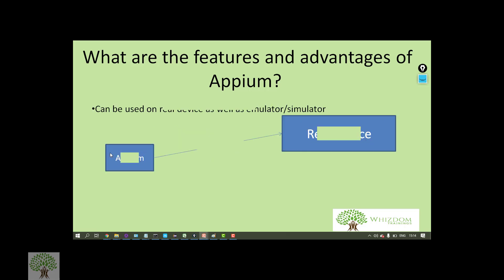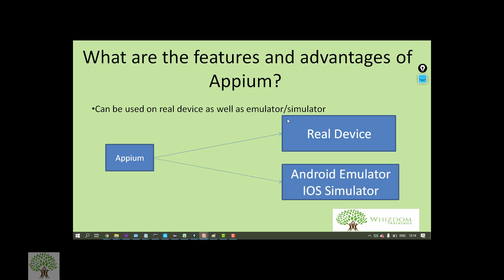Appium can be used with a real device as well as an emulator or simulator. It can automate applications on a real Android or iOS device. If you don't have a physical device, you can use the Android emulator or iOS simulator on your machine to automate apps. As a beginner, if you don't have a phone, the emulator or simulator works, though it is a little slow.